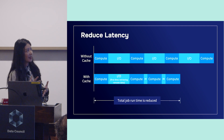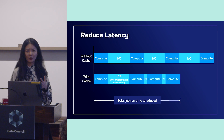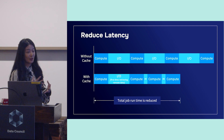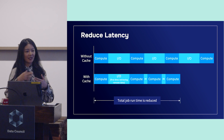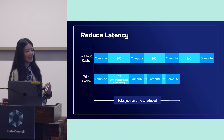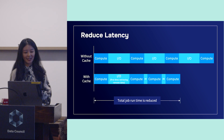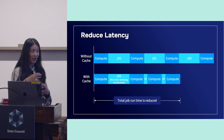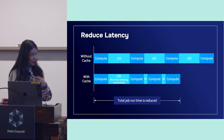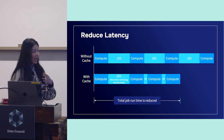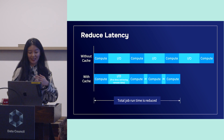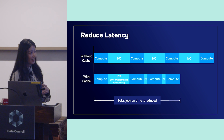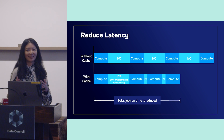From the latency perspective, think about your jobs consisting of computation, then I/O, then more computation. By having a cache that co-locates data with your compute, you can greatly reduce the I/O time, which reduces the entire total job runtime — because you have guaranteed latency as if your data is local.